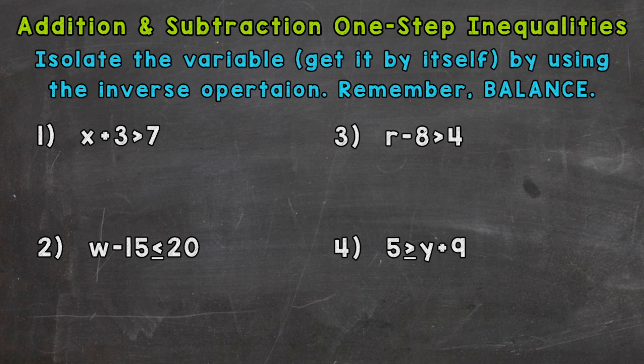Now, these are very similar to solving one-step equations. We need to isolate the variable, which means get it by itself, by using the inverse or opposite operation. Remember, balance. Whatever we do to one side, we have to do to the other. The difference between these inequalities and equations is equations have one solution.